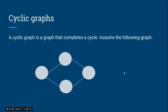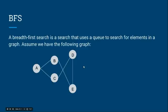Now we get to cyclic graphs, which is quite simple to grasp. A cyclic graph is a graph that completes a cycle. Assume the following graph. We have this. We can see everything completes a cycle. We can have another edge going here. We have two cyclic graphs. So when you're programming is cyclic, you just look for they all connect by a graph.